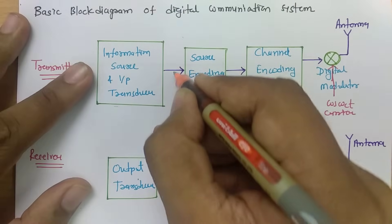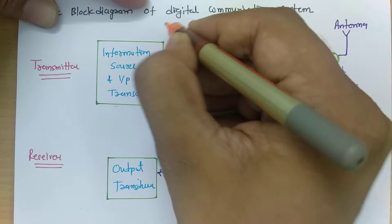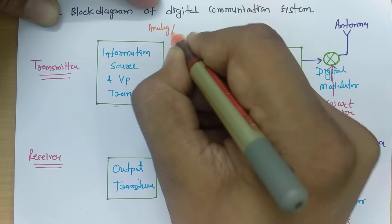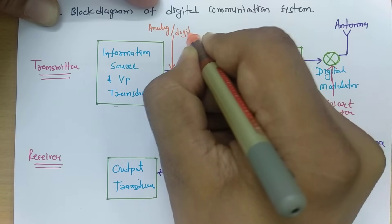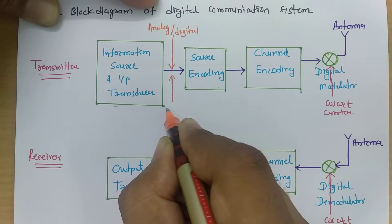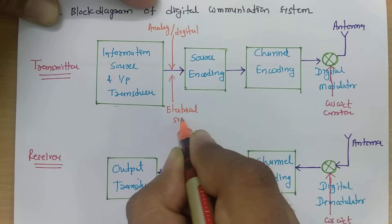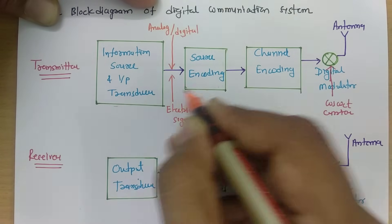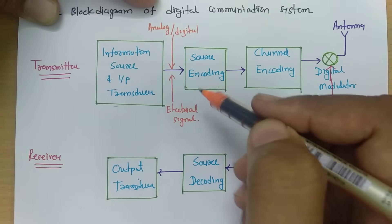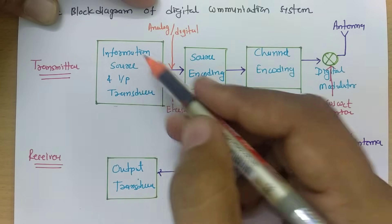After the information source and input transducer block, the output signal will be electrical, and it may be either an analog signal or a digital signal.